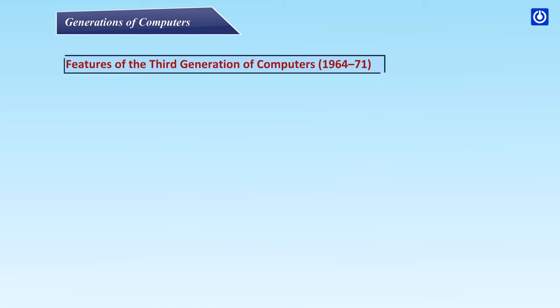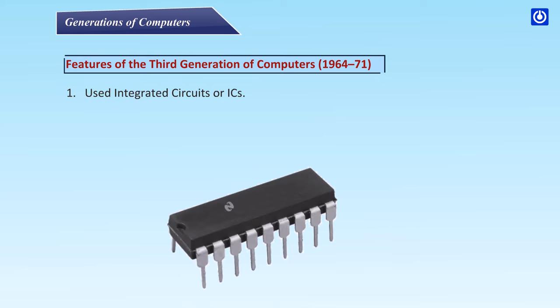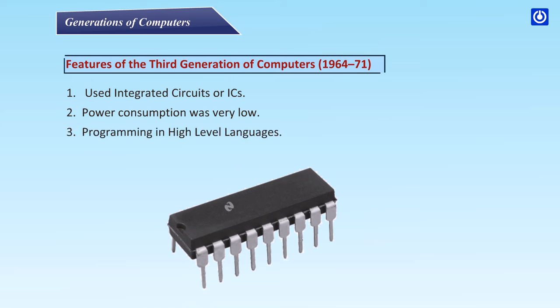Features of the Third Generation of Computers (1964–1971): Used integrated circuits (ICs); power consumption was very low; programming in high-level languages.